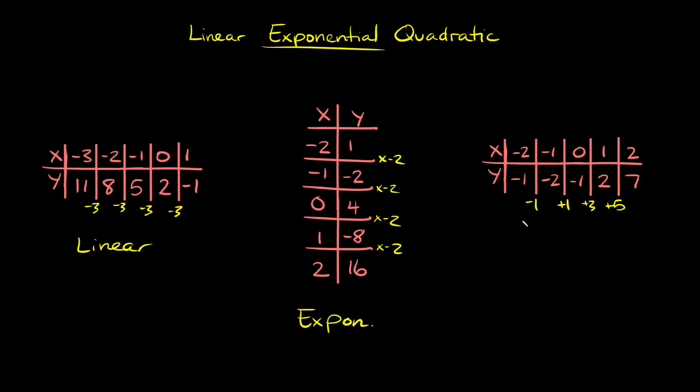That obviously looks pretty random, but the other way you can check to see that this is a quadratic function is look at the difference between the numbers I just wrote down. So to get from negative 1 to positive 1, you add 2. To get from positive 1 to positive 3, you add 2. To get from positive 3 to positive 5, you add 2.